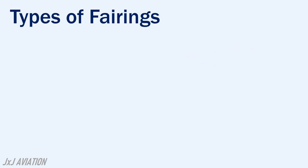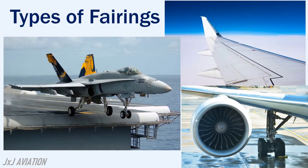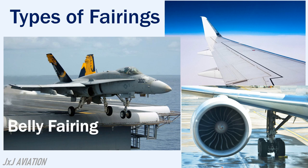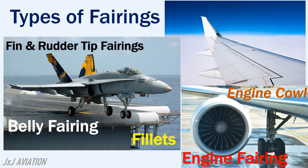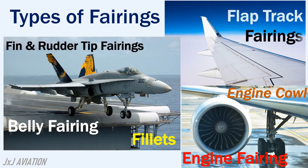The types of fairings. Depending on the aircraft, different types of fairings may be installed. An aircraft may have a belly fairing, an engine fairing which is called an engine cowl, a fairing at the intersection of the wing and the fuselage called fillets, fin and rudder tip fairings, and flap track fairings.